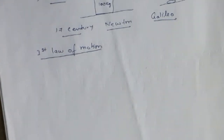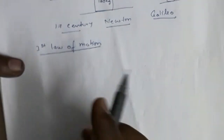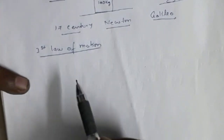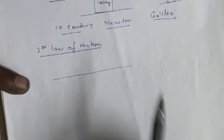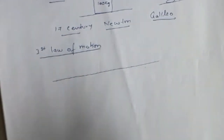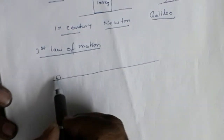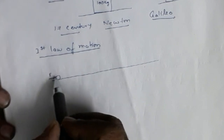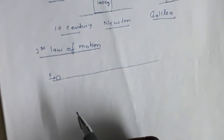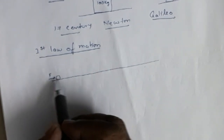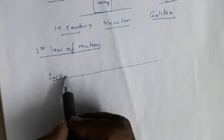Now we have Newton's First Law of Motion. This law was actually stated by Galileo but then modified by Newton. Before stating the law, consider this example: on a perfectly smooth, frictionless ice surface, a ball is initially at rest with no force acting on it. If a force F is applied, it will start moving forward, and since there is no friction, it will continue to move forever.